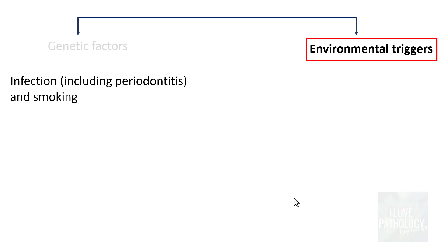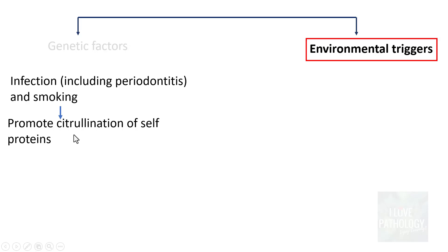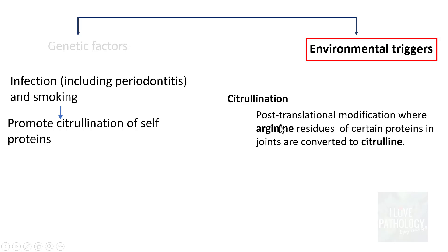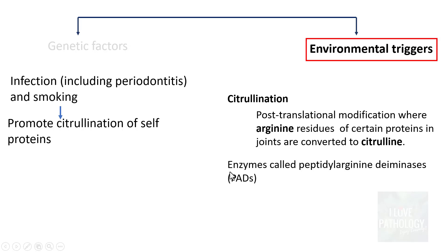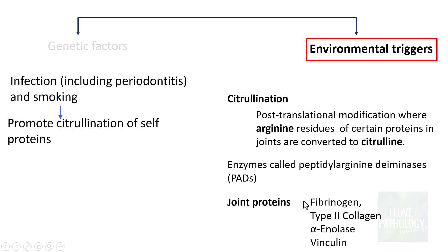Environmental triggers include infection — even something as simple as periodontitis — and smoking, which is an important risk factor. These triggers promote citrullination of cell proteins. Citrullination is a post-translational modification where arginine residues of certain joint proteins are converted to citrulline by enzymes called peptidyl arginine de-aminases (PADs). The joint proteins that get citrullinated include fibrinogen, type 2 collagen, alpha-enolase, and vinculin.